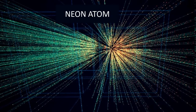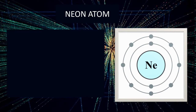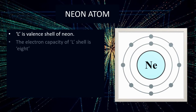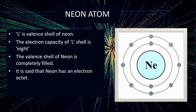Let us look at the neon atom. The neon atom has ten electrons filled in shells K and L. K shell has two electrons and the remaining eight electrons are fitted in L shell. Since the electron capacity of L shell is eight, the valence shell of neon is completely filled. This condition is called an electron octet, because eight electrons are completely filled in the outermost shell, that is the valence shell.